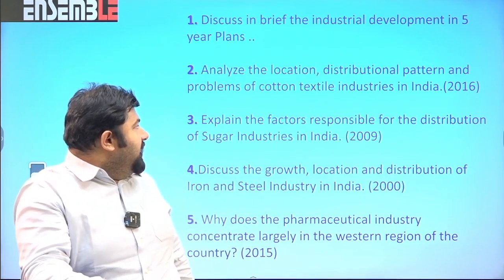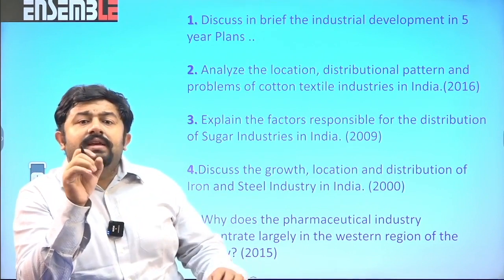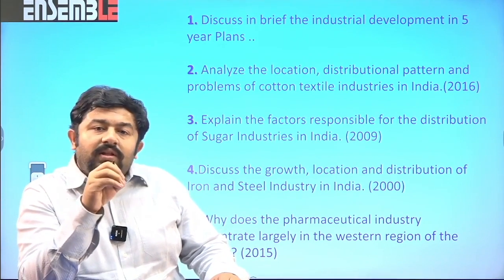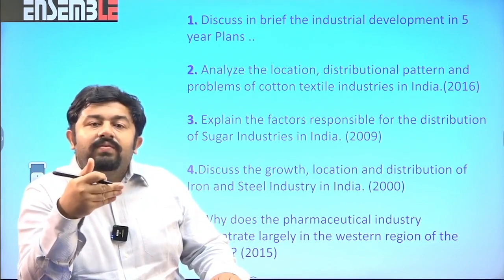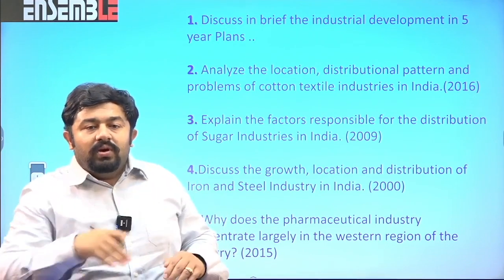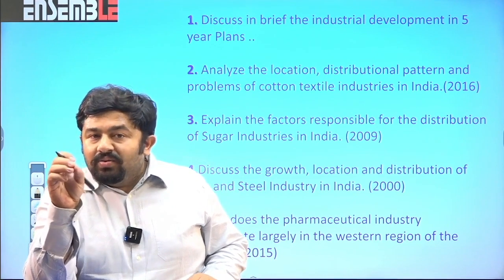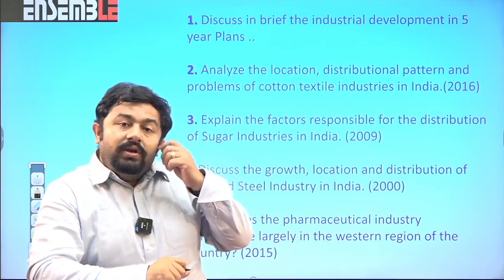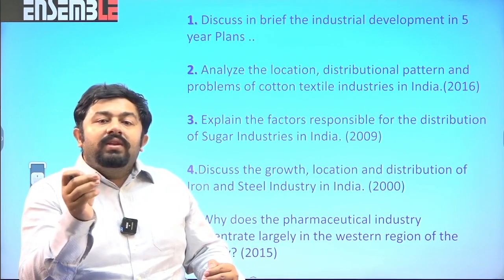Question number three: examine the factors responsible for the distribution of sugar industries in India. Sugar industries are located near the raw material and not near the market. Why? Because the material index is much less than one — the final product's weight is much lesser than the raw material. To minimize transportation cost, these industries are located near the raw material. So once you know where sugarcane is grown, you can map the distribution of sugar industries.